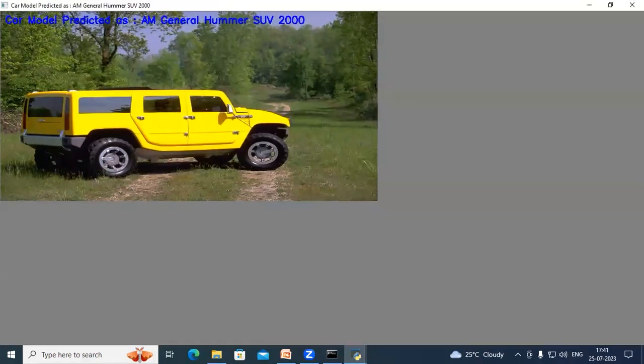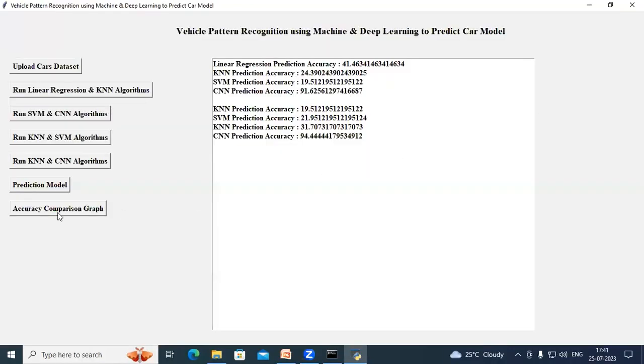So in the blue color text, we can see the predicted model. Car model predicted as AM General Hummer SUV 2000. Close this image and now click on accuracy comparison graph.